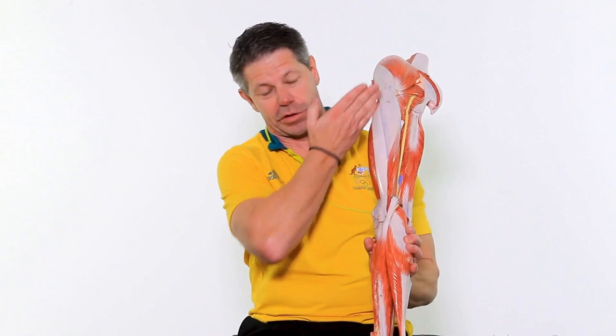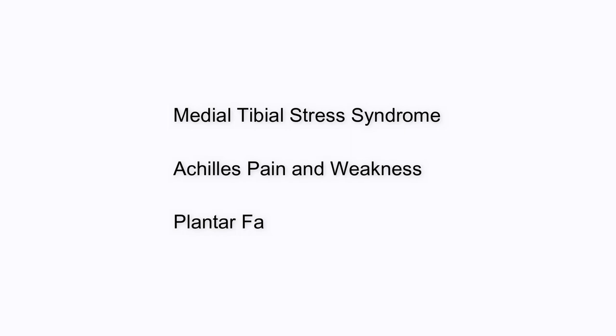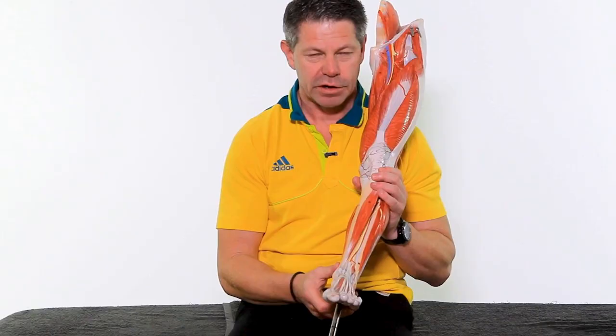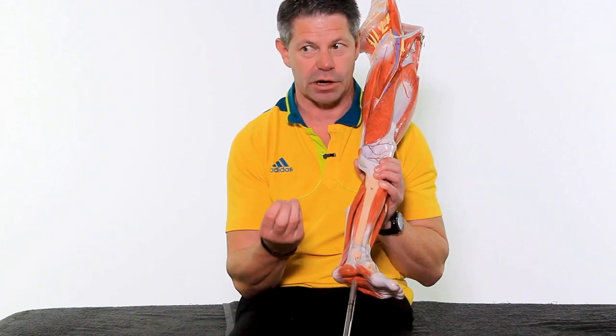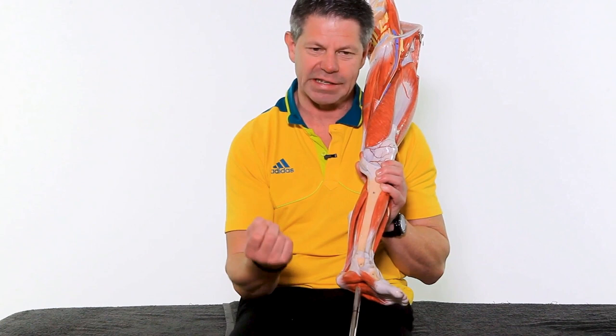We're going to talk about the leg. This is the thigh, this is the leg, and we've got three specific conditions to discuss. Each condition is quite unique, but they can all coexist together, which is really unfortunate. The first condition is medial tibial stress syndrome — or in common terms, shin splints — which we see a lot in runners, usually at the start of their season.